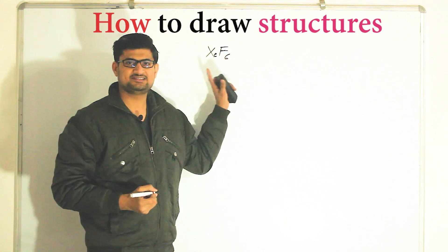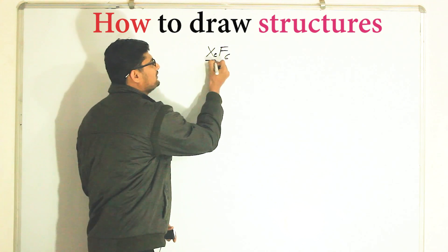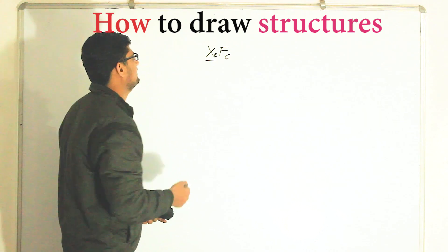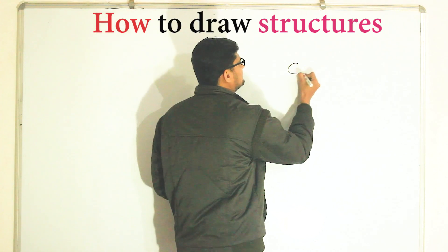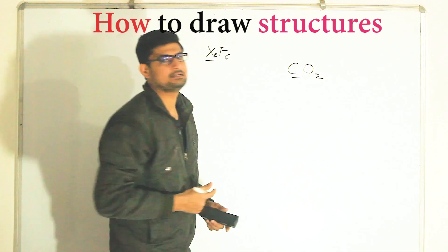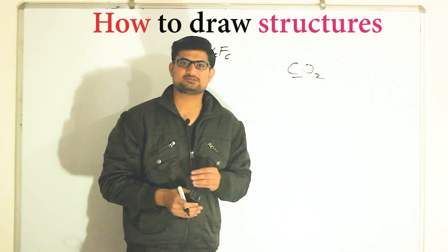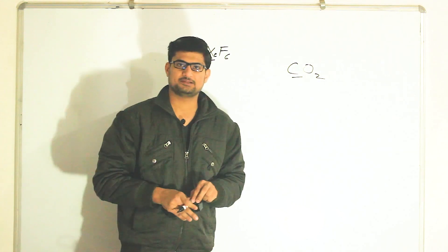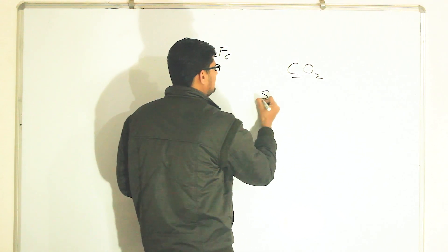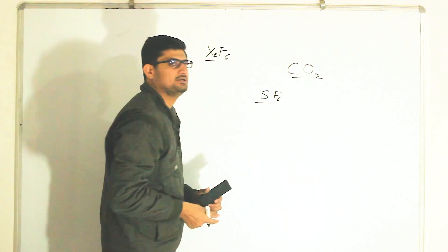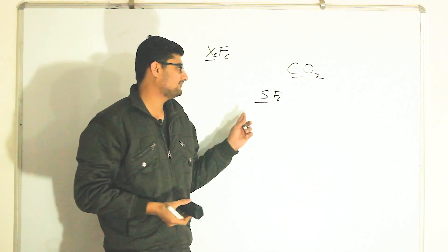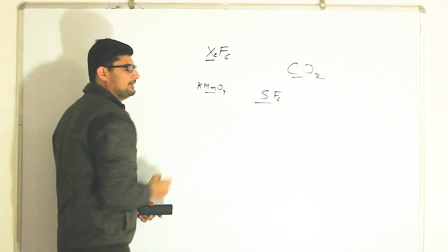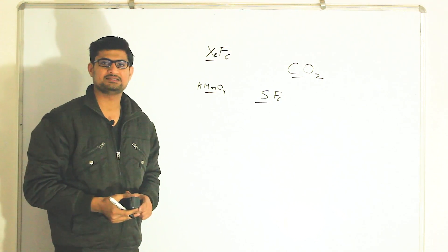In the case of XeF6, xenon is going to be the central atom as it belongs to a period greater than the third. In the case of CO2, carbon is going to be the central atom as carbon belongs to the second period and it has a lower electronegativity value compared to oxygen. In the case of SF6, sulfur is going to be the central atom as sulfur belongs to the third period. In the case of KMnO4, manganese is going to be the central atom.